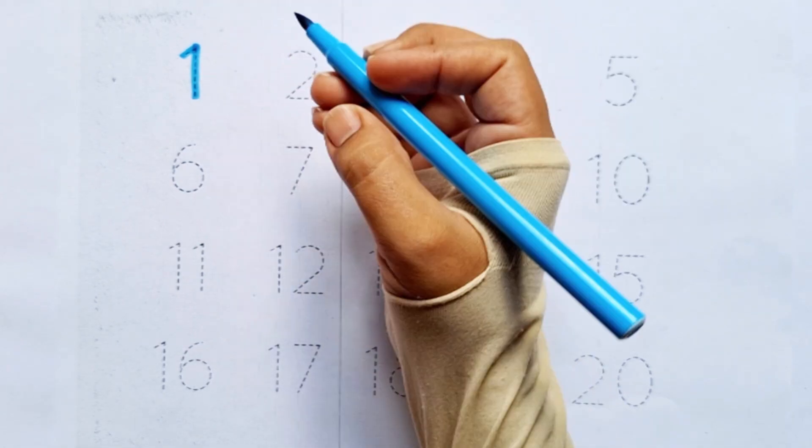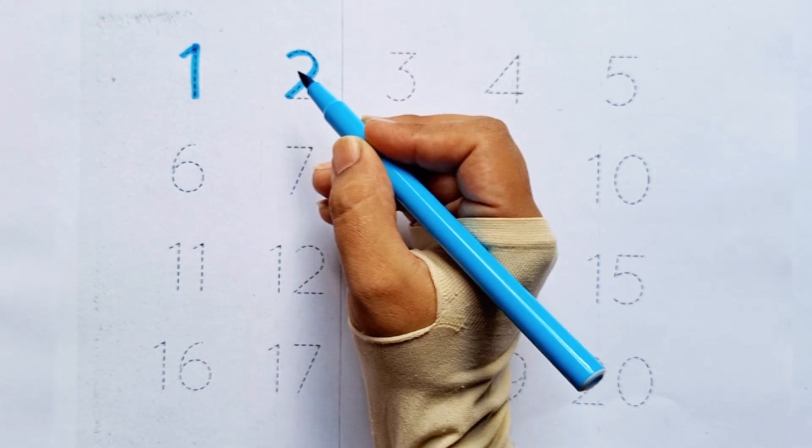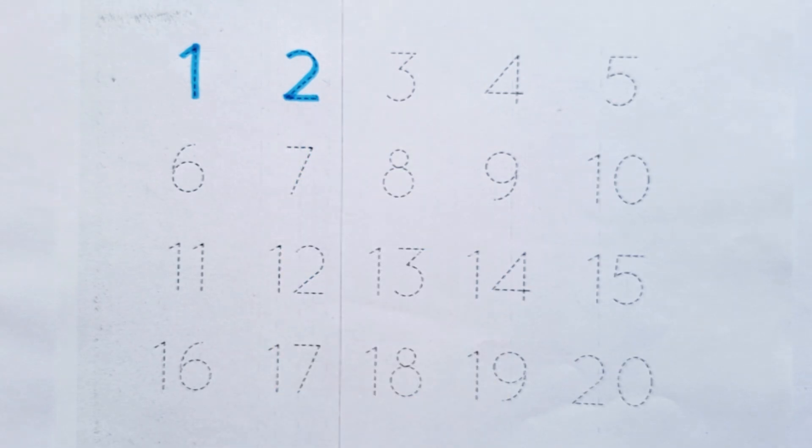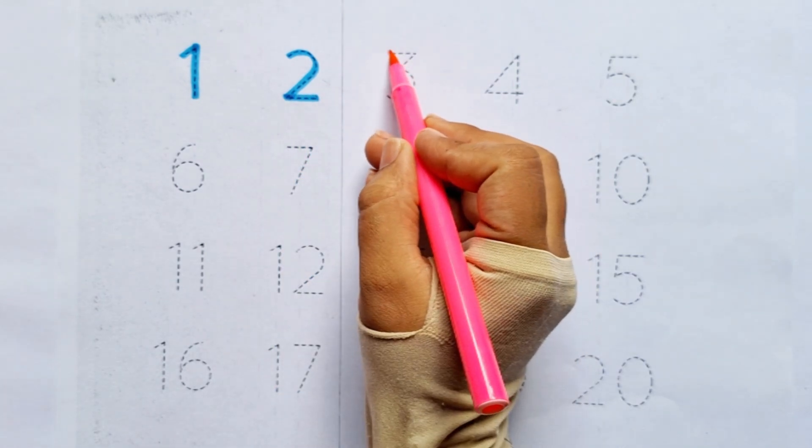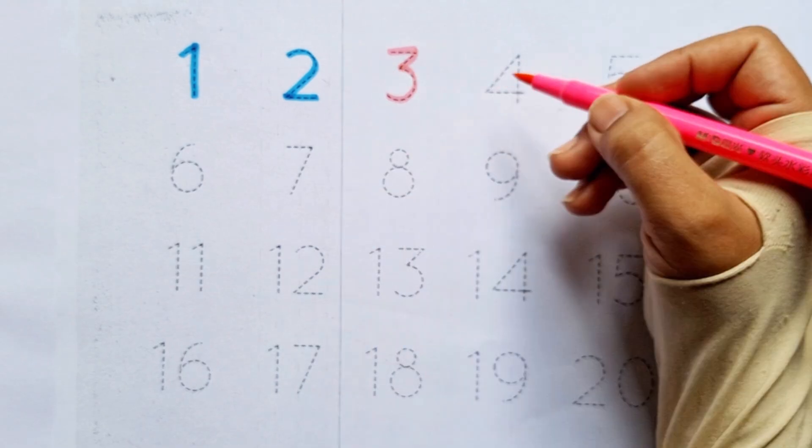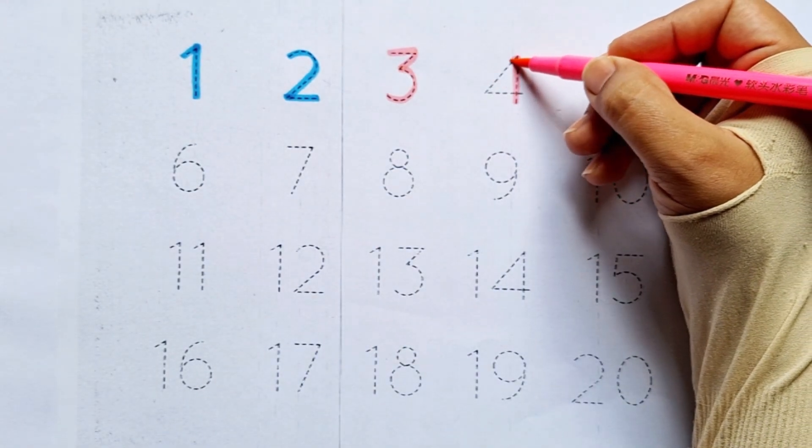Two. This is two. After one comes two. Three. This is three. After two comes three. Four. This is four. After three comes four.